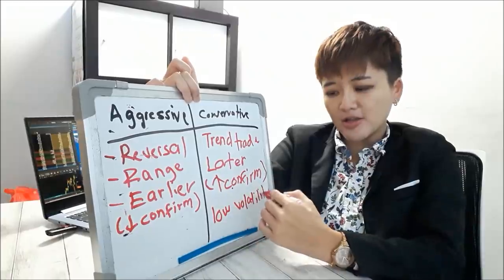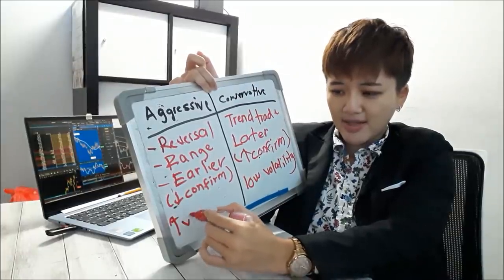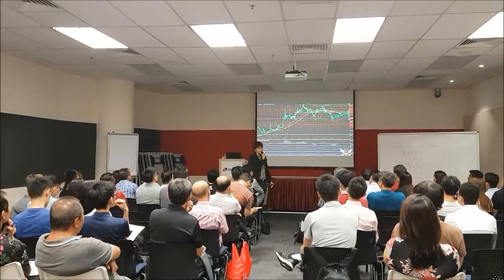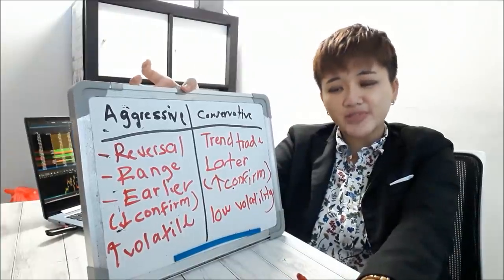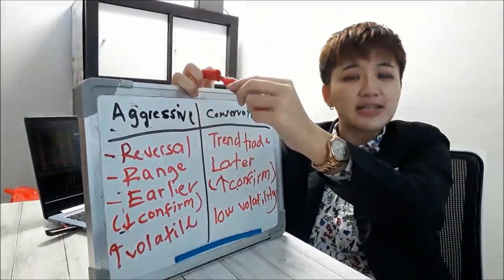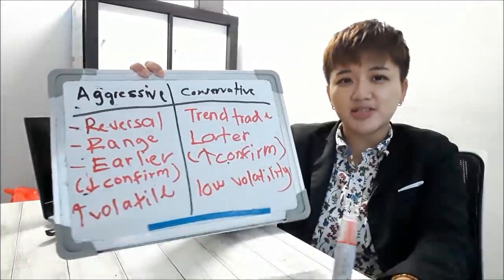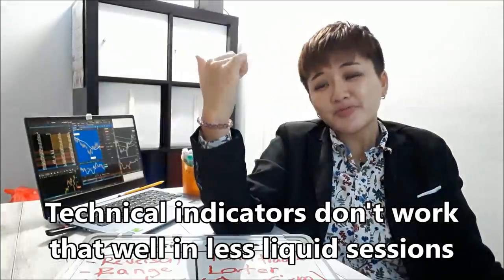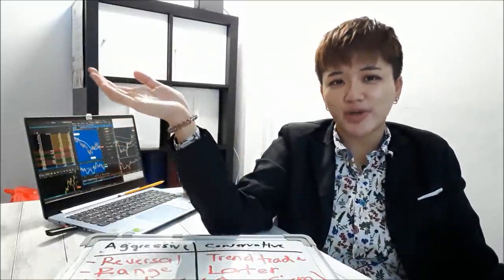Conservative traders would try to trade during low volatility markets, while aggressive traders love volatility and trade volatile, less liquid markets. Conservative traders prefer more liquid markets and trading sessions — for example, the London trading session compared to the Asia session. In general, it's very important to avoid trading during less liquid sessions, because the indicators will not work out as well.